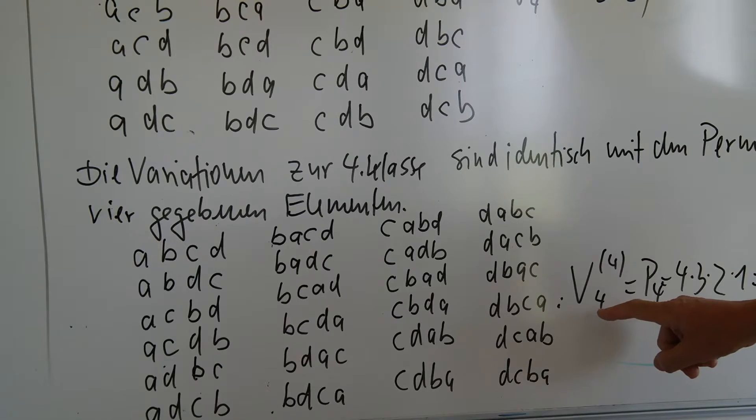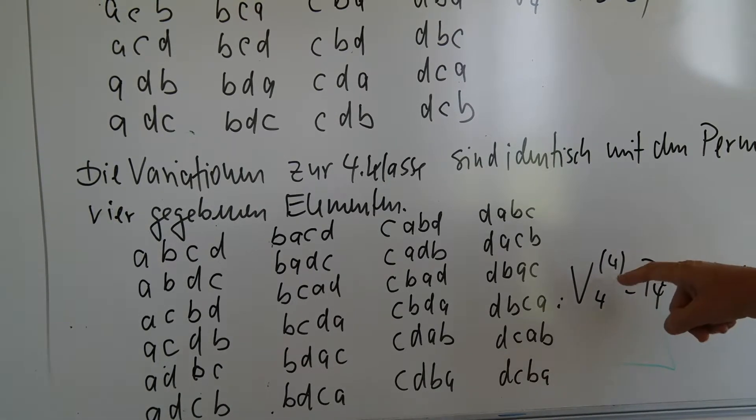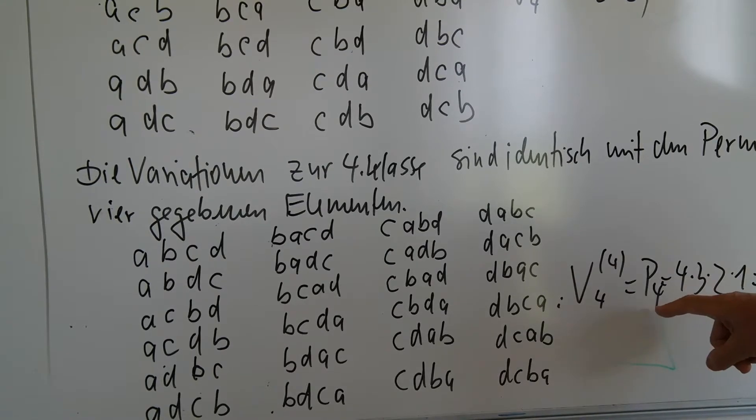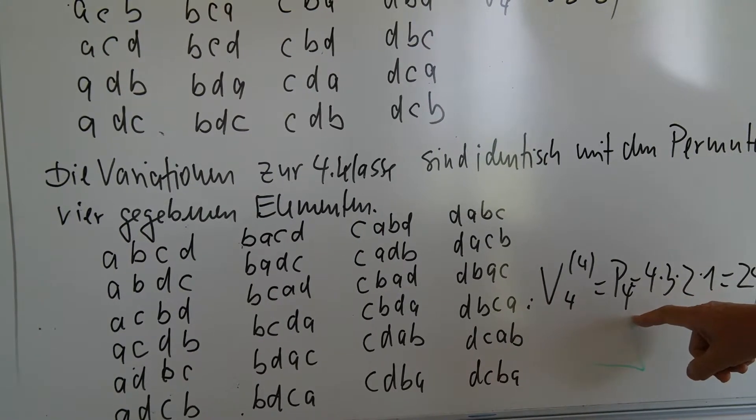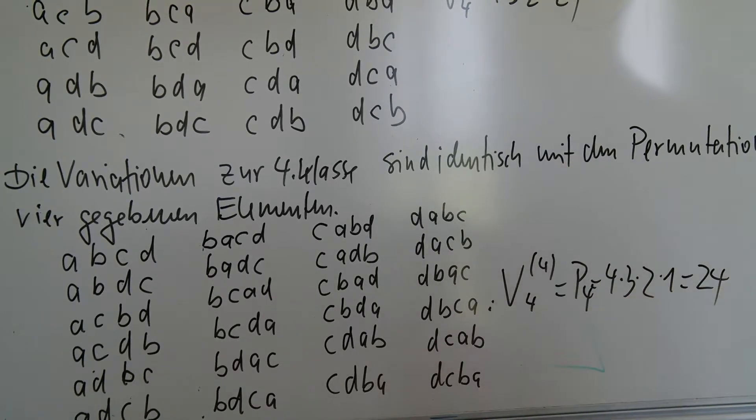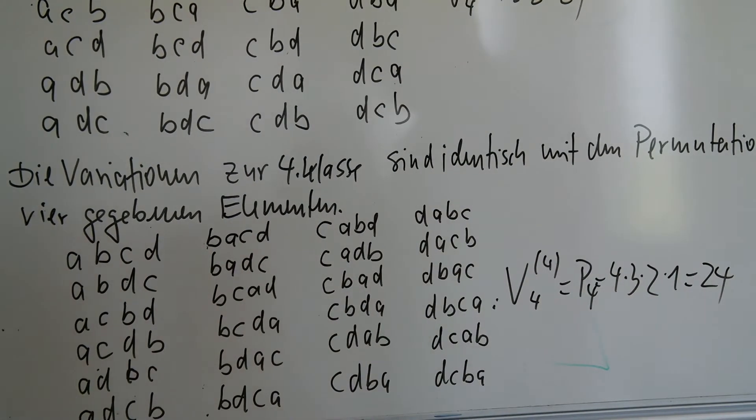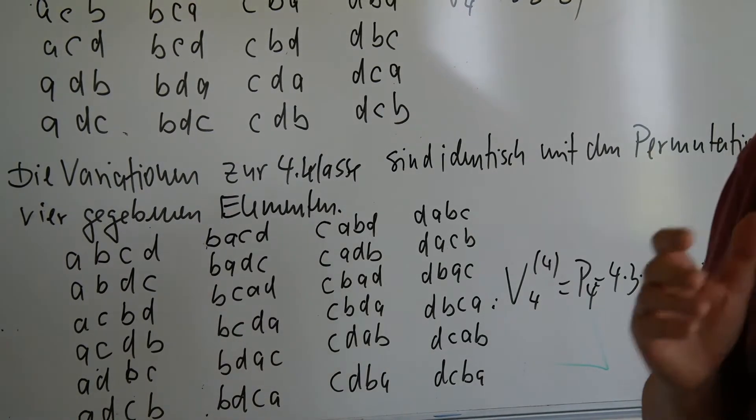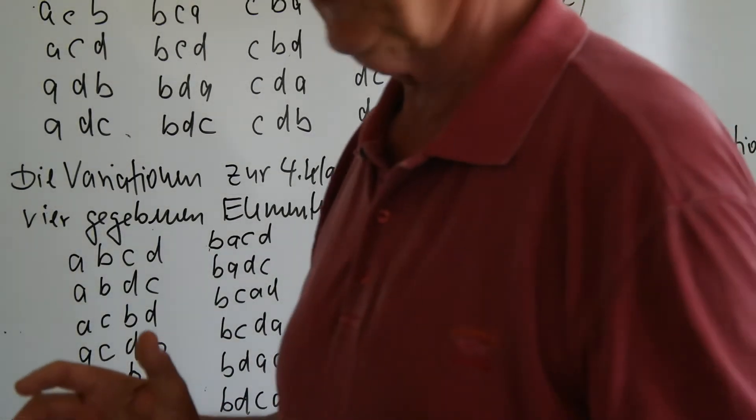Dann ergibt sich die Variation von vier Elementen zur vierten Klasse, das ist gleich der Permutation von vier Elementen und das ist 4 mal 3 mal 2 mal 1, das ist 24. Nun will ich das noch verallgemeinern und kann dann sagen,